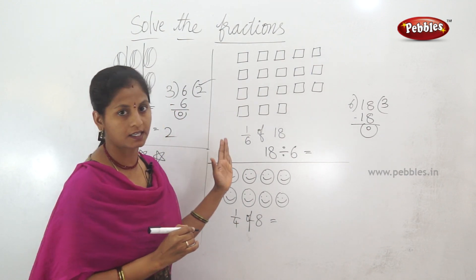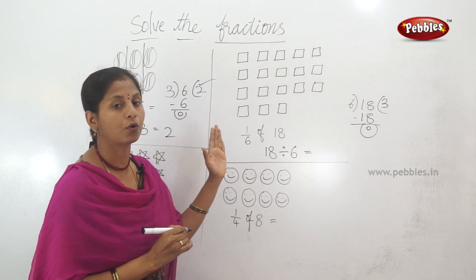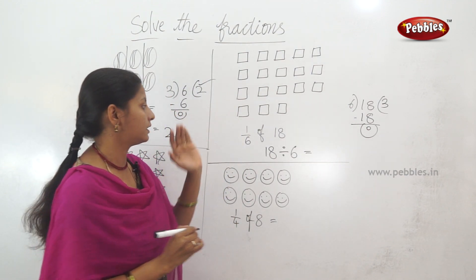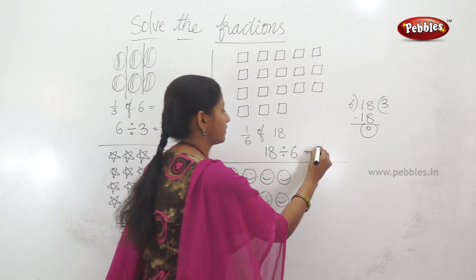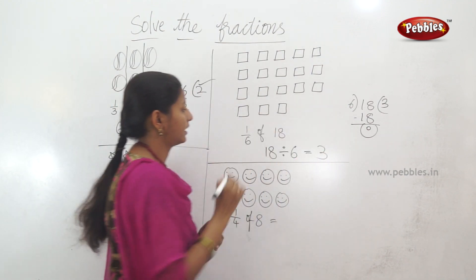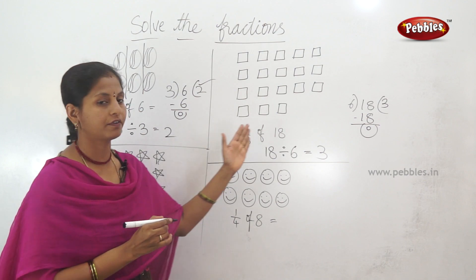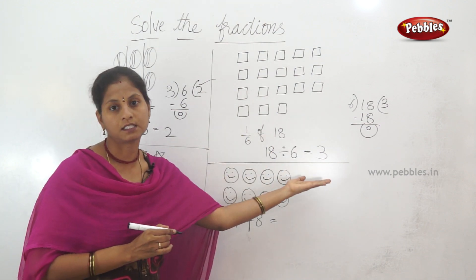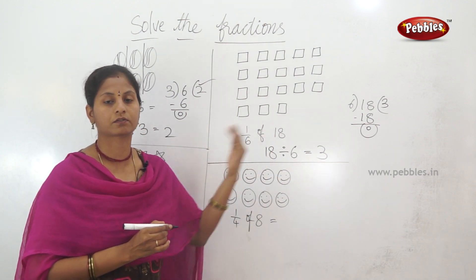18 is divided into 6 parts of the square. 18 divided into 6 equal parts gives 3 squares each. So, 1 by 6 of 18 means 3.